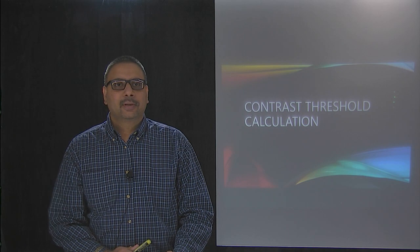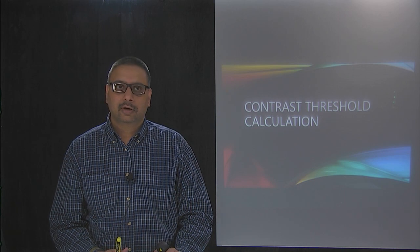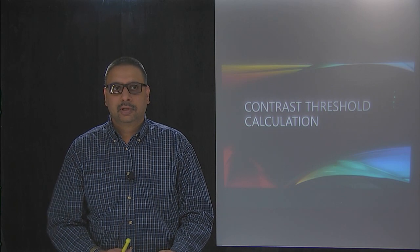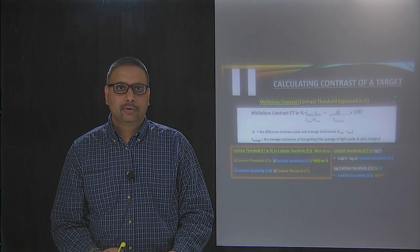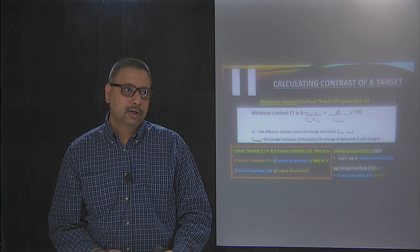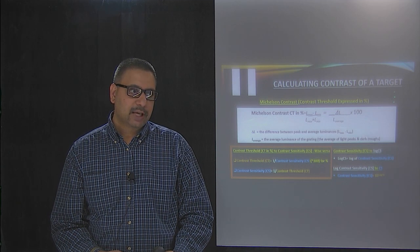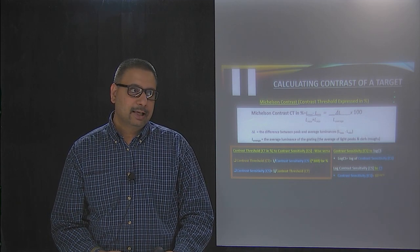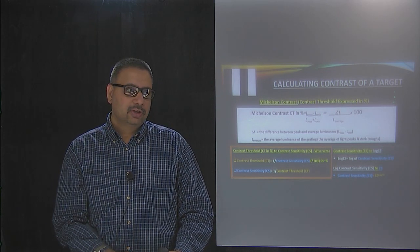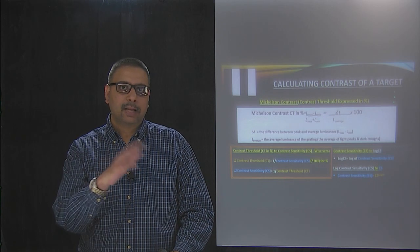Let's go over some contrast calculations — calculating contrast sensitivity from contrast threshold, or calculating Michelson contrast when you have black and white stripes of gratings. To review the formula quickly: you can calculate the contrast of a target using Michelson's formula, which is luminance max minus luminance minimum divided by luminance max plus luminance minimum. In other words, it's delta L divided by L average, where delta L is the difference between the peak and the average luminance.